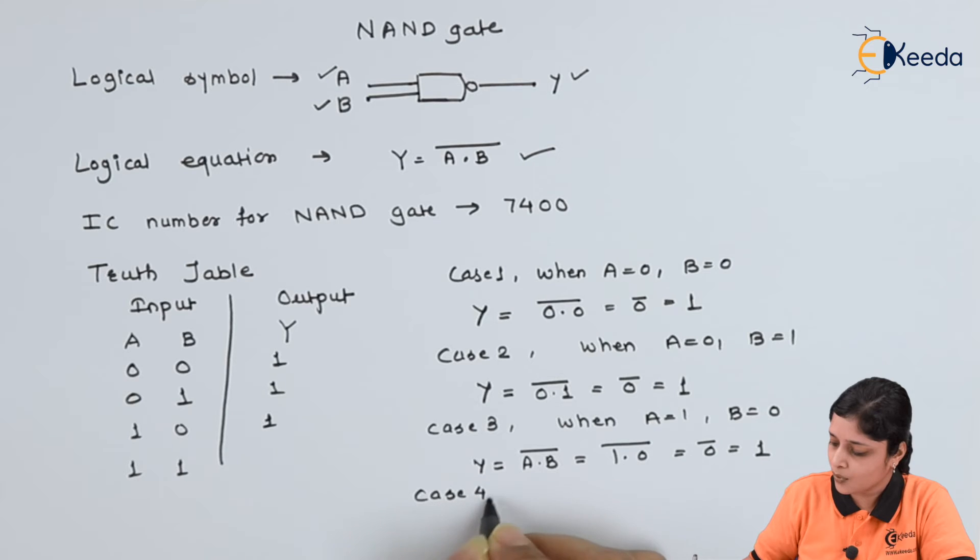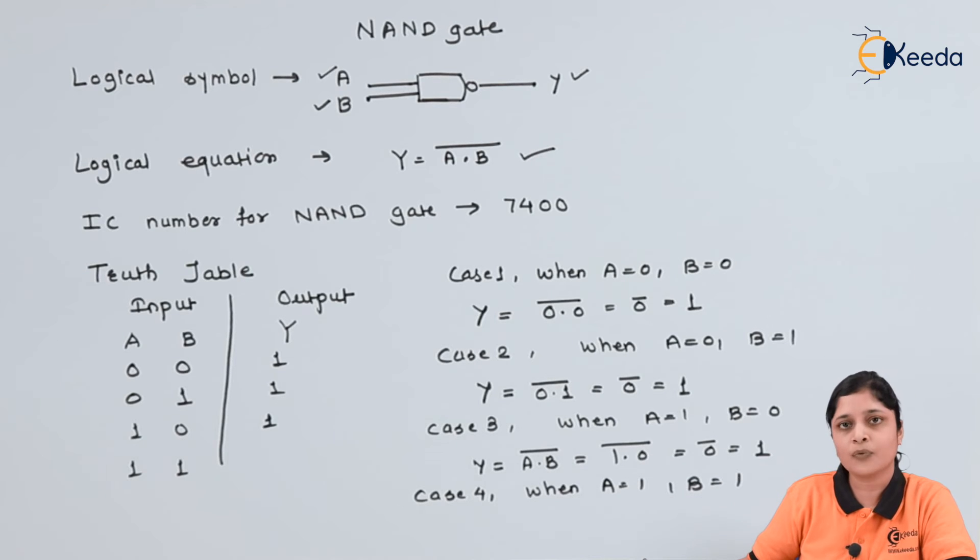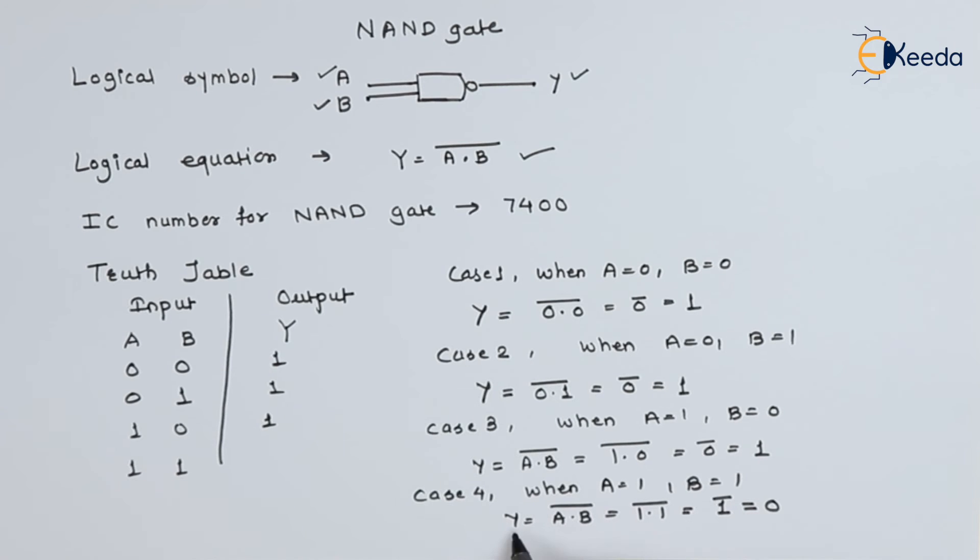Then case 4: when A equals to one, B equals to one, what you will get? Put the values. Y equals to A dot B bar. We have written one dot one bar, that is one dot one means one into one is one. Complement of one is zero.